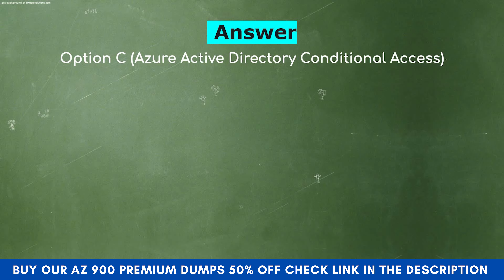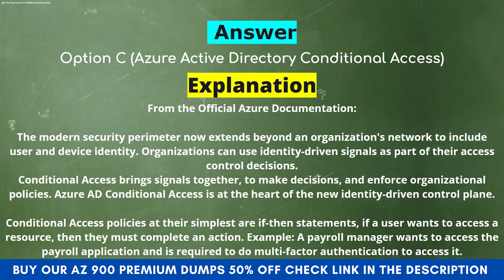Explanation from the official Azure documentation: The modern security perimeter now extends beyond an organization's network to include user and device identity. Organizations can use identity-driven signals as part of their access control decisions. Conditional Access brings signals together to make decisions and enforce organizational policies. Azure AD Conditional Access is at the heart of the new identity-driven control plane. Conditional Access policies at their simplest are if-then statements: if a user wants to access a resource, then they must complete an action. Example: a payroll manager wants to access the payroll application and is required to do multi-factor authentication to access it.